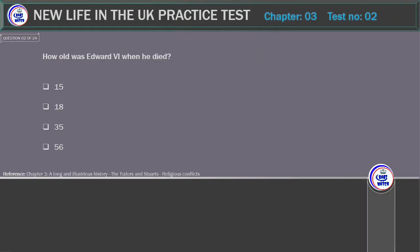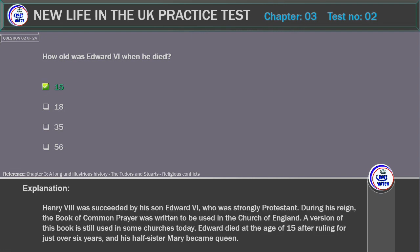How old was Edward VI when he died? Options: 15, 18, 35, 56. Correct answer: 15. Explanation: Henry VIII was succeeded by his son Edward VI, who was strongly Protestant. During his reign, the Book of Common Prayer was written to be used in the Church of England. A version of this book is still used in some churches today. Edward died at the age of 15 after ruling for just over six years.